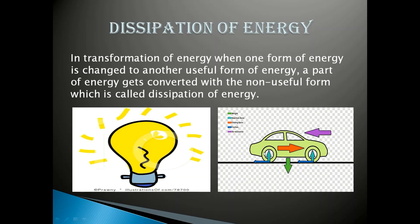In a moving car, chemical energy converts into mechanical energy, but some energy is lost overcoming frictional force with the road — released as heat energy. You can feel the wheel is hot after a long drive. Air resistance also causes energy loss. These energy losses during transformation are all examples of dissipation of energy.